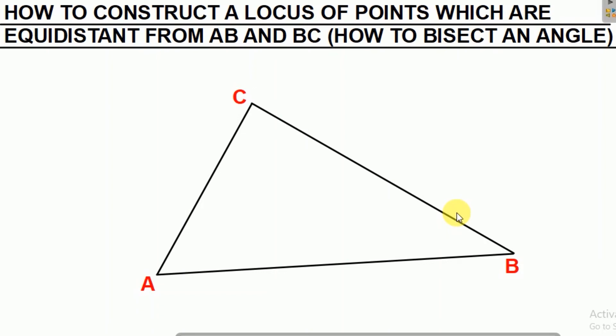Let us now look at how to construct a locus of points which are equidistant from AB and BC. This type of question means how you can bisect an angle, and we need to identify which angle we are going to bisect.